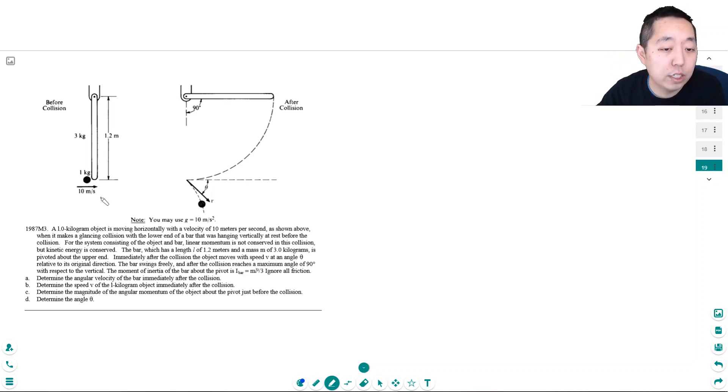So the energy before, the only energy this thing has is one half mV squared. It has kinetic energy of this ball. Technically it has potential energy but right after the collision it hasn't moved quite yet. So I'm going to ignore the gravitational potential energy right away. Which is one half times one kilogram times 10 meters per second squared. That's 100 times 0.5. That's 50 joules.